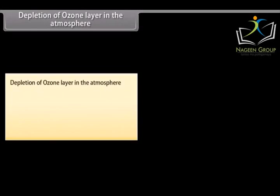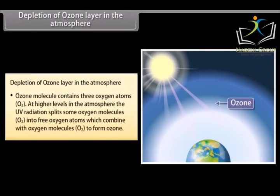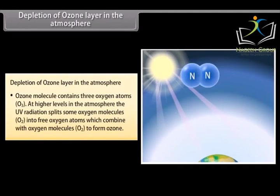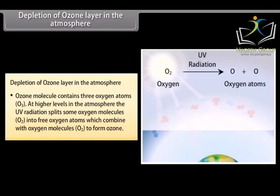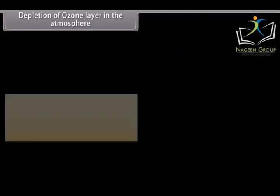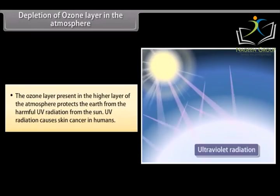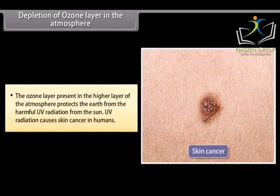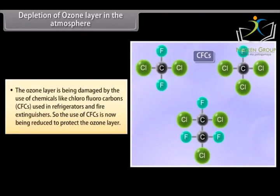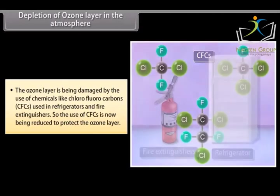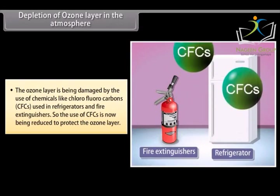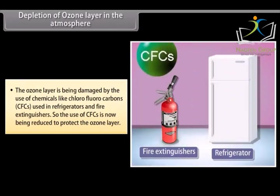The ozone molecule contains three oxygen atoms (O3). At higher levels in the atmosphere, UV radiation splits some oxygen molecules (O2) into free oxygen atoms, which combine with O2 to form ozone. The ozone layer in the upper atmosphere protects the earth from harmful UV radiation from the sun, which can cause skin cancer in humans. The ozone layer is being damaged by chemicals like chlorofluorocarbons (CFCs), used in refrigerators and fire extinguishers, so the use of CFCs is now being reduced.